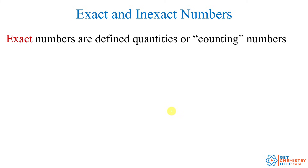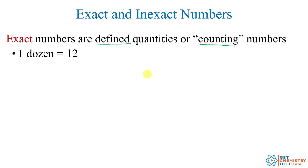Now, there are actually two different types of numbers that we work with in science. The first type are known as exact numbers. Exact numbers are those that have been defined to be true or those that you can obtain through counting. So there's no ambiguity, no guessing, no estimating, no approximating. For example, one dozen has been defined to be exactly 12 — it's not around 12, it is exactly 12. It's been defined to be true.